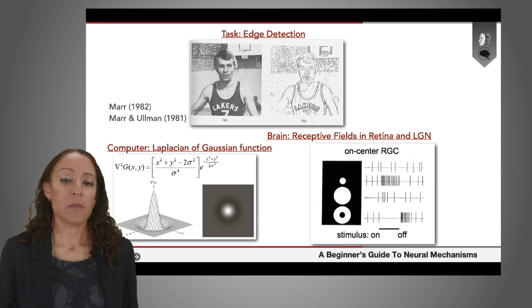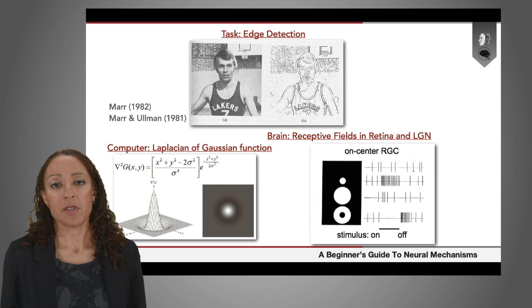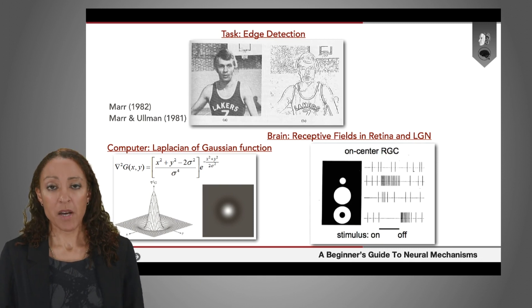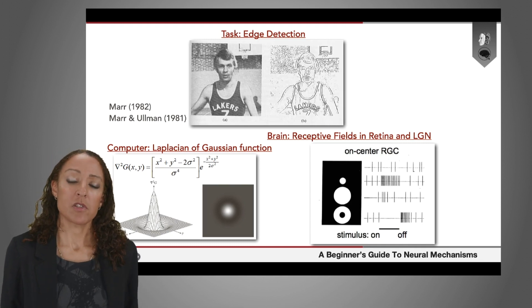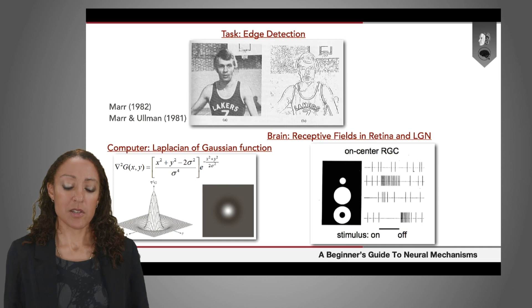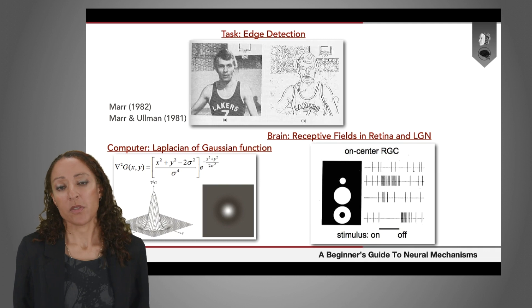So by thinking of the retina as part of this long series of information processing transforms that goes on and can be described mathematically, you can form big picture explanations of what the visual system is doing as this hierarchical series of image processing steps. And then that allows you to theorize that what vision ultimately is, is this computational process.